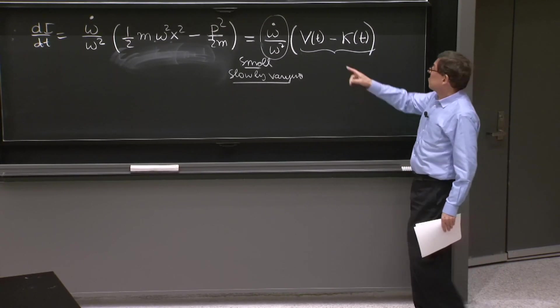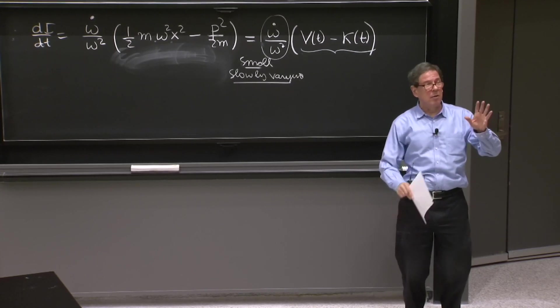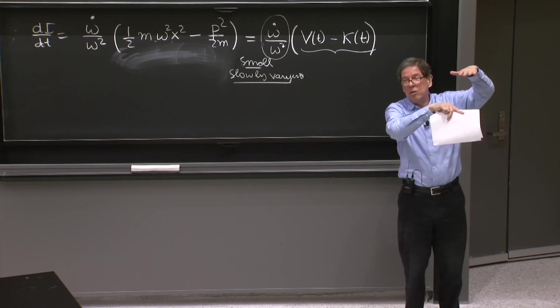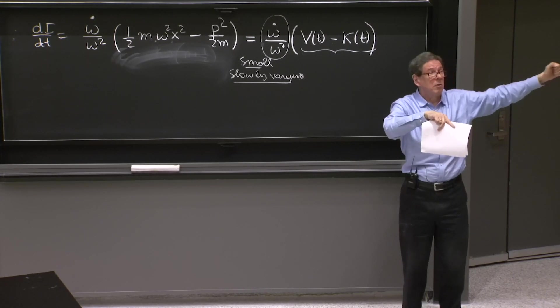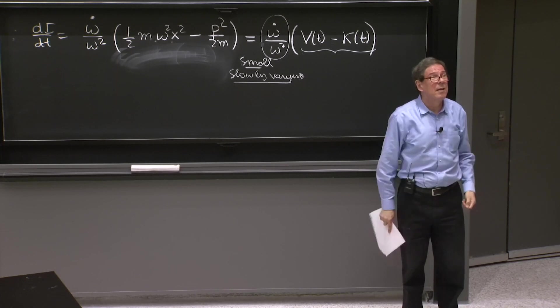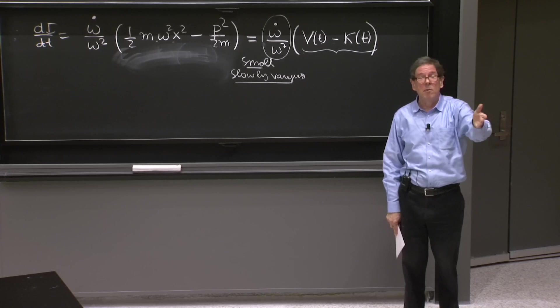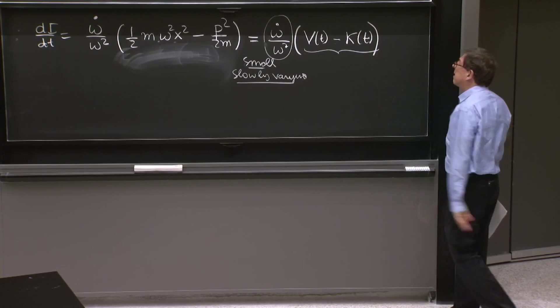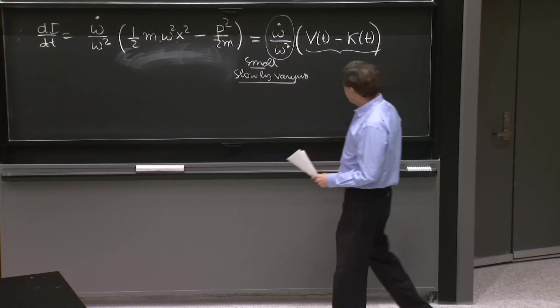This is neither small nor slowly varying, in fact. Why? Potential minus kinetic energy. The potential energy in an oscillator goes up when the kinetic energy is zero. As the oscillator goes to the end, stretches the most, the potential energy is large, the kinetic energy is zero. As it goes through the center at the equilibrium point, the kinetic energy is large. So this is oscillating. And it's very large.